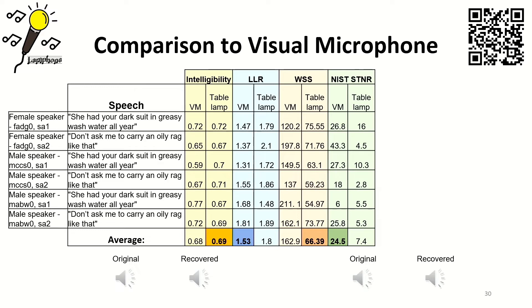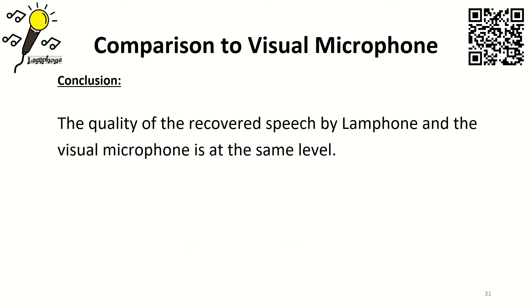I will play the original speech and then the recovered speech. Original: 'She had your dark suit in greasy wash water all year.' Recovered: 'She had your dark suit in greasy wash water all year.' Another example — original: 'Don't ask me to carry an oily rag like that.' Recovered: 'Don't ask me to carry an oily rag like that.' Bear in mind, this was recovered from light. We analyzed the performance and found that the quality of recovered speech by LAMPHONE and the visual microphone is about the same level.